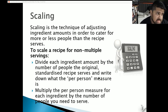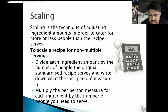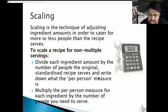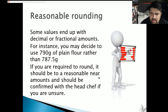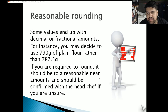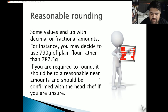For example, if you have 10 liters of strawberry milkshake prepared for 20 people, roughly 500 milliliters is per person. If only 10 people attend, you would serve 5 liters. Reasonable rounding: some values end up with decimals. For instance, you may use 790 grams of plain flour rather than 787.5 grams. If rounding is required, it should be to a reasonable near amount and confirmed with the head chef if unsure, because adding a little too much salt or baking powder might ruin the dish.